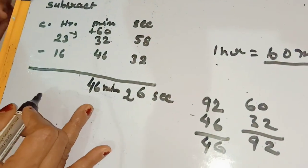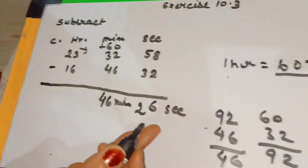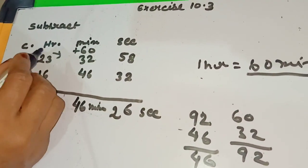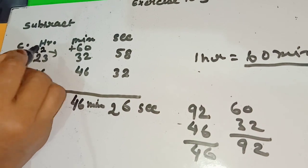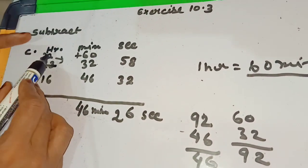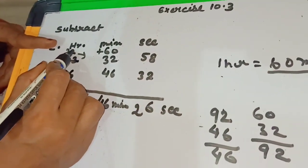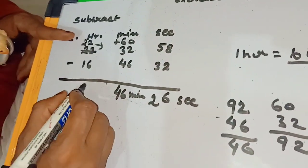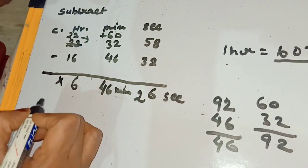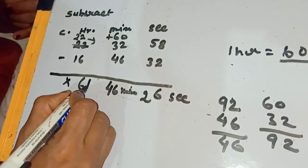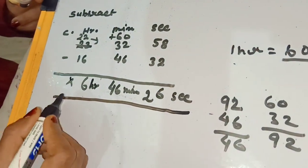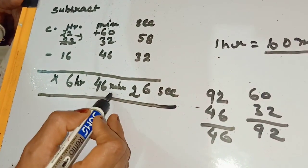46 minutes is less than 60, and the seconds are also less than 60, so we are fine. When we take 1 hour, it becomes 22 hours. We subtract 16 from 22: 12 minus 6 is 6 — we take 1 carry from 2, and 1 carry is taken so it becomes 0. So the hours are 6. The final answer of this question is 6 hours, 46 minutes, 26 seconds.